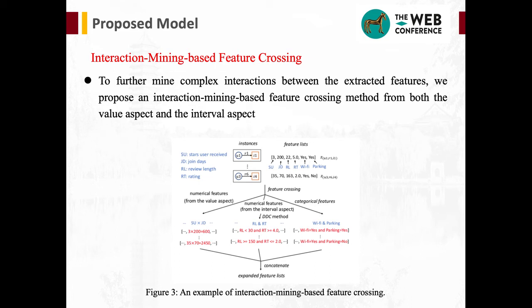The information from neighbors with multiple hops can be fused by multiple layers of neighbor pooling. To further mine complex interactions between the extracted features, we propose an interaction mining-based feature crossing method from both the value aspect and the interval aspect. From the interval aspect, we propose a novel discriminability-driven crossing method named DDC, which focuses on exploring interval interactions between numerical features. For instance, review length and rating can jointly detect spam reviews, since shorter reviews with extreme ratings are highly suspicious.